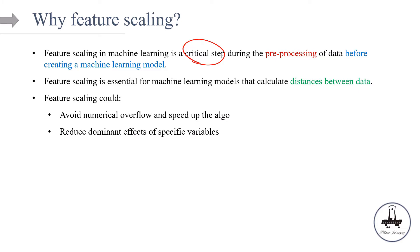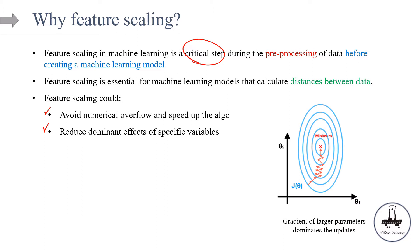In general, feature scaling can help the computer avoid numerical overflows and speed up the algorithm. Computers have a hard time handling very tiny numbers on one hand and gigantic ones on the other when calculating gradients. Feature scaling also helps reduce the dominance effects of a specific variable.